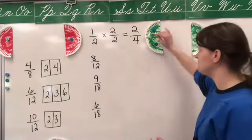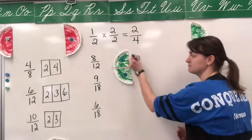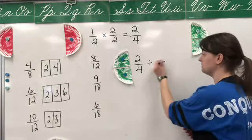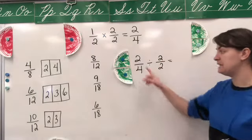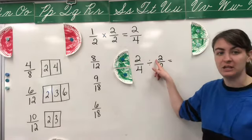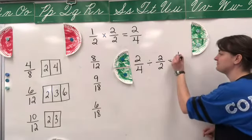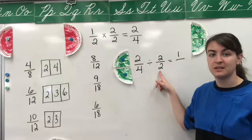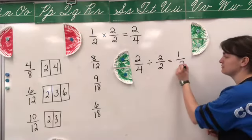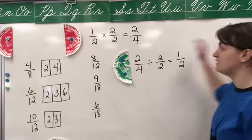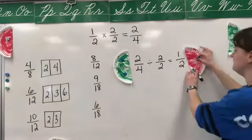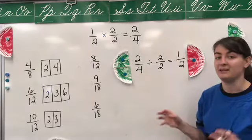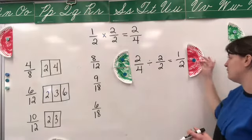So it would be like I took this 2/4 and divide it by a fraction equal to one — we're going to go with 2/2. So I divide it: two divided by two equals one, and four divided by two equals two. So 2/4 is equal to 1/2. What we did is we just reduced this fraction 2/4, or made it smaller, to get the fraction 1/2.